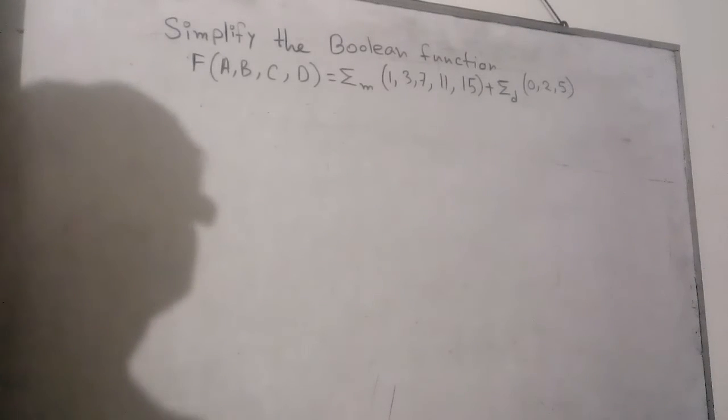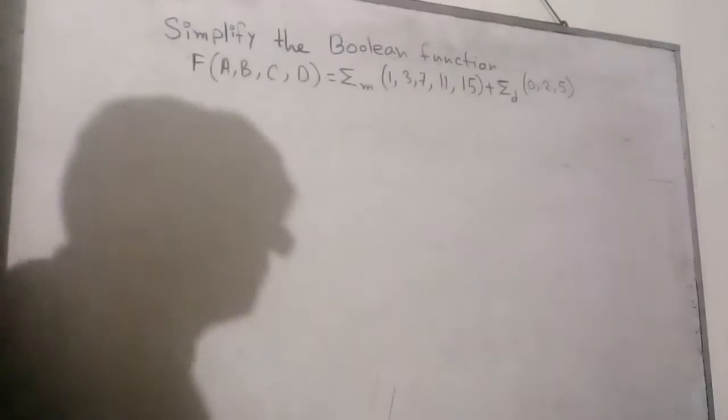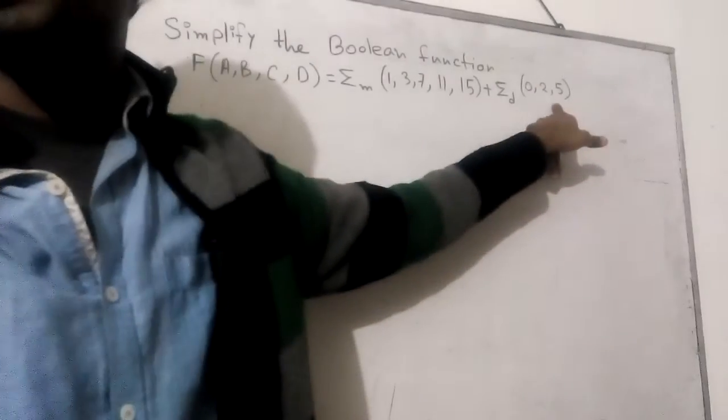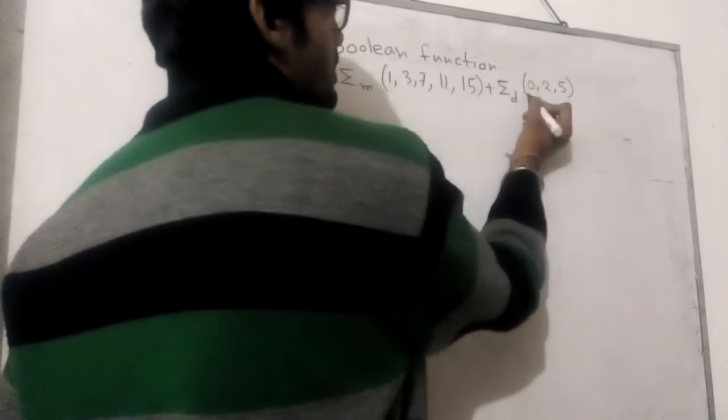We are going to simplify this Boolean function. Here we can see don't-care options like summation with d sign - it represents don't-care.